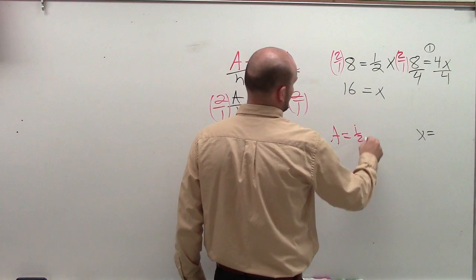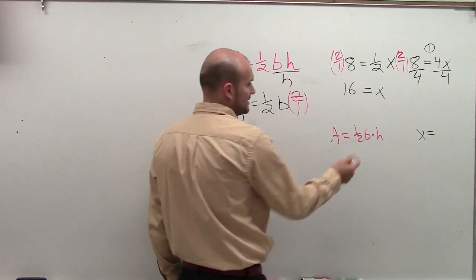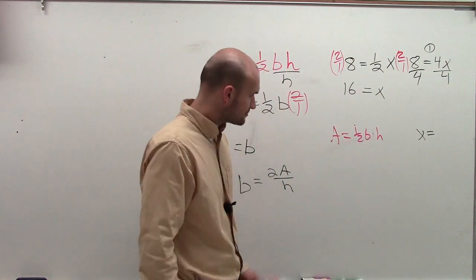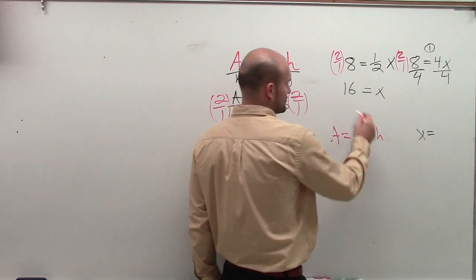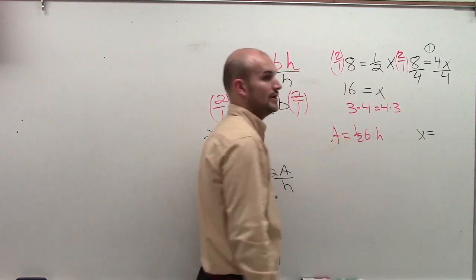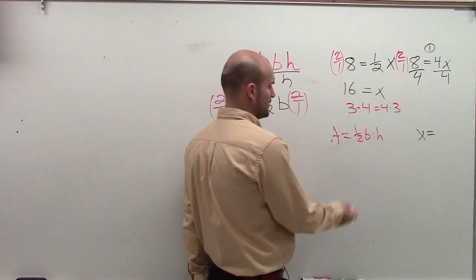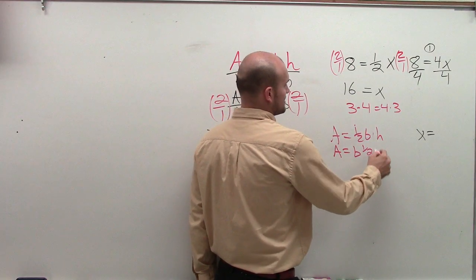a equals one-half b times h, right? You don't have to. The other thing I want to tell you about is you could do these at the same time. A lot of times, what other students remember is 3 times 4 equals 4 times 3, right? It doesn't matter how you order them. So I can rewrite this as a equals b times one-half h.